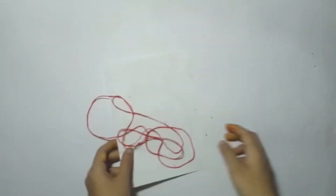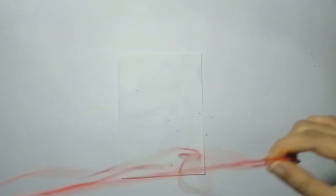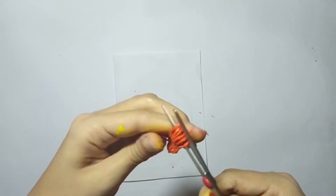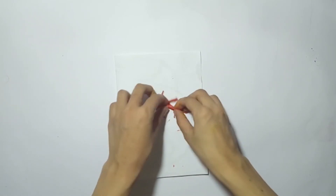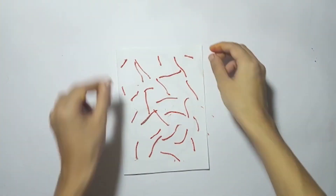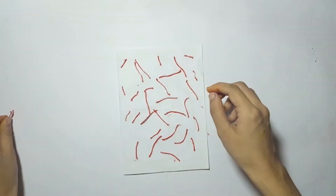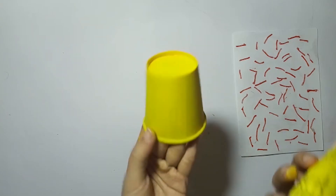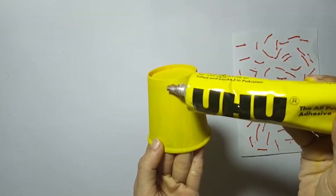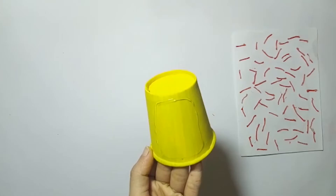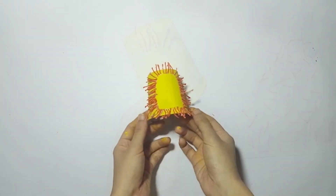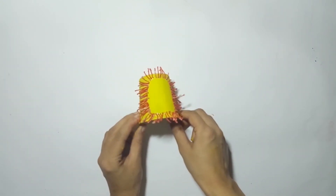Now take thread and cut it into small pieces. Apply glue on the disposable cup and paste these pieces of thread on it. Now try its features.